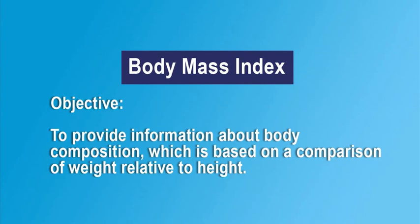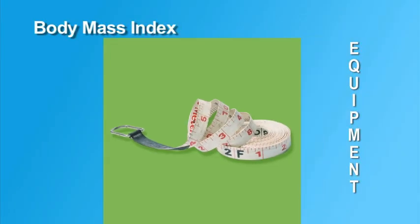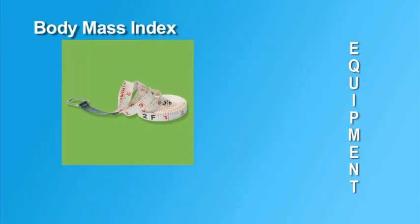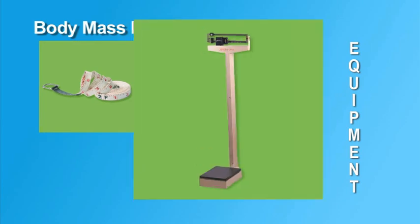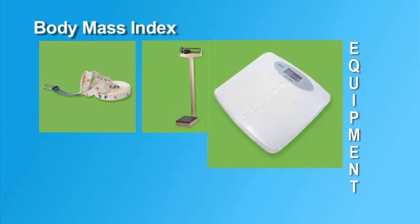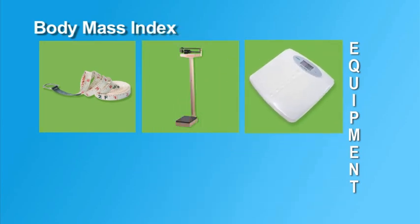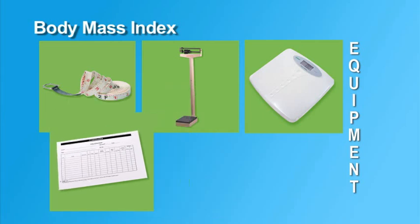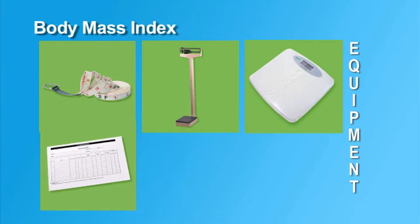BMI may not be the best measure of body composition for muscular individuals. To calculate the body mass index, or BMI, the examiner will need the height and weight of each student. There are a variety of measurement devices which may be used to obtain these values. The examiner also needs copies of score recording sheets.